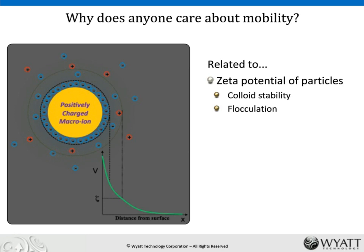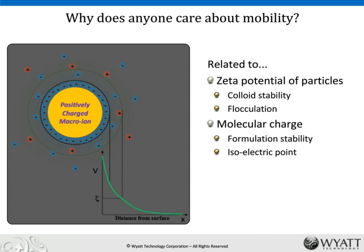The zeta potential is a well-defined concept in colloid stability, often used to determine whether something will stay in solution. For example, when making paint, you modify the surface chemistry of pigment particles to make them highly charged so they all repel each other and don't stick together. As long as they're highly charged, the solution is stable. If the charge goes away, they can flocculate. For molecular solutions — proteins and nanoparticles — the concepts are similar but slightly different because ions can interpenetrate inside the molecule, and you can get selective binding. You can also use this to measure the isoelectric point, where the surface charge goes to zero and mobility goes to zero.